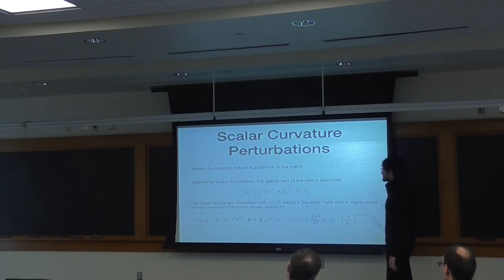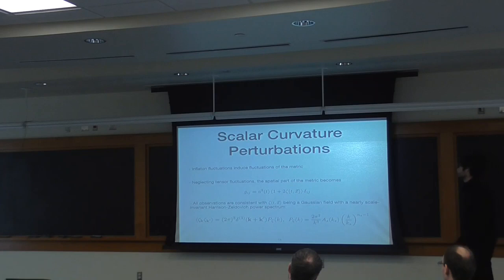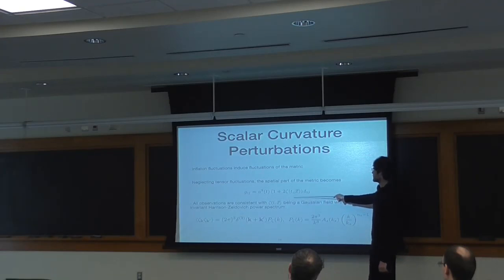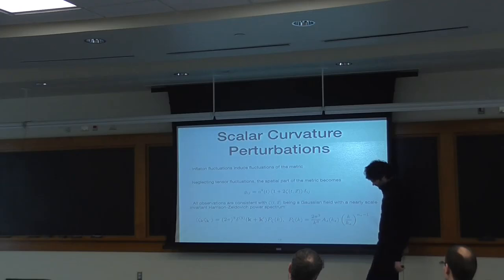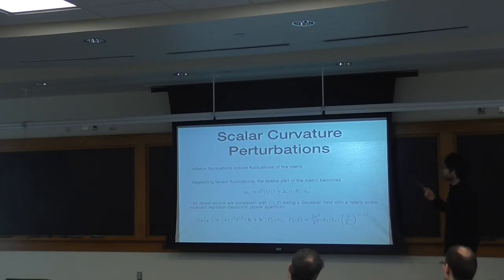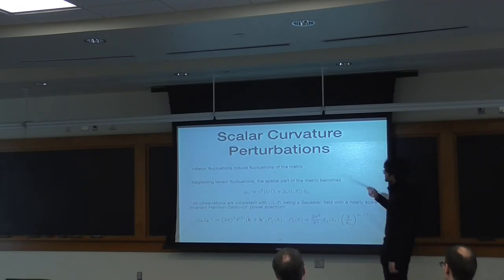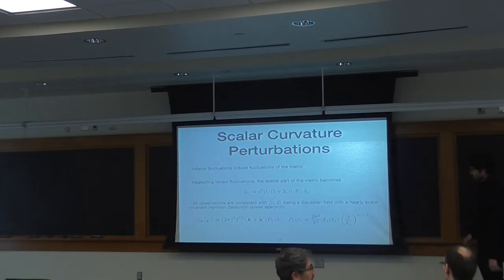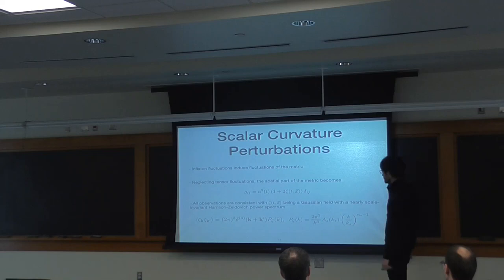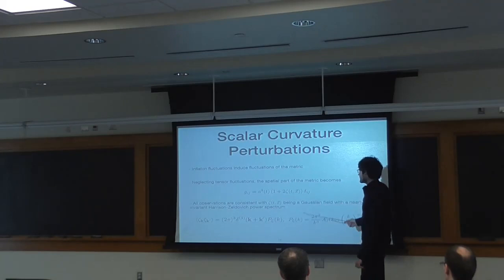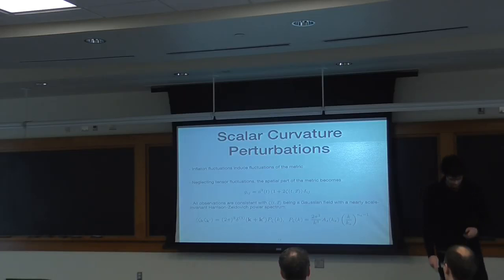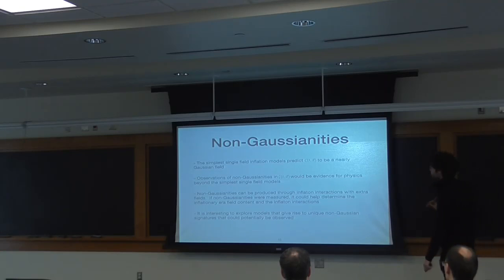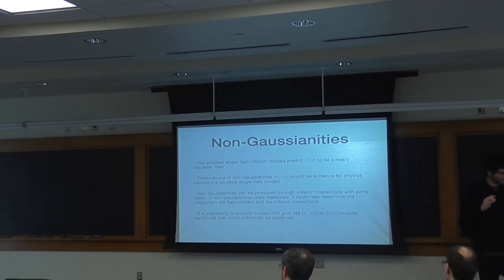If we neglect tensor fluctuations, the spatial part of the metric will just be the standard FRW factor plus a small perturbation known as the scalar curvature perturbation zeta, which parameterizes these inhomogeneities induced by the inflaton fluctuations. All observations to date of the CMB and large-scale structure are consistent with the scalar curvature perturbation zeta being a Gaussian field of just Gaussian statistics — we have not seen connected three-point functions or four-point functions of zeta. The power spectrum of this Gaussian field is nearly Harrison-Zel'dovich scale-invariant, going like one over k cubed times k to some small power.